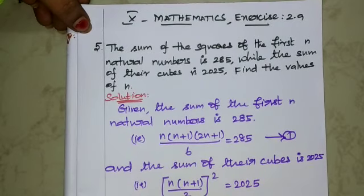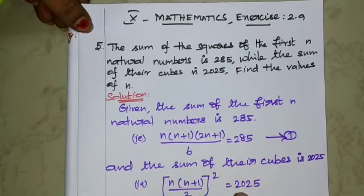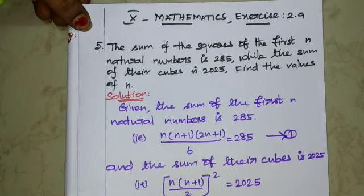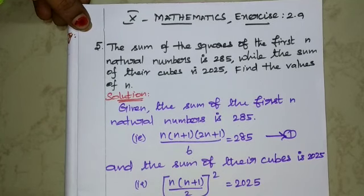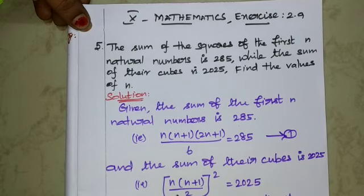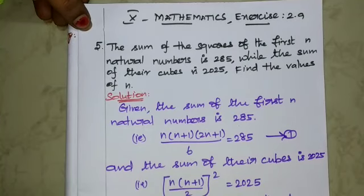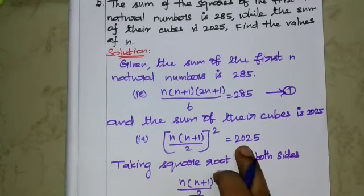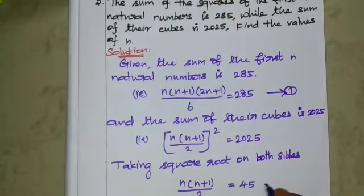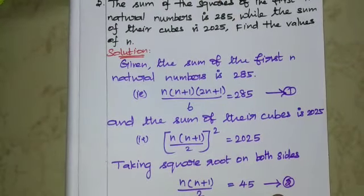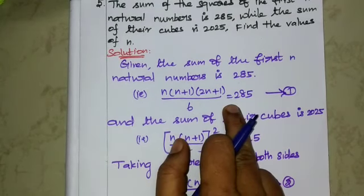Taking square root on both sides: n(n+1)/2 = 45. This is equation 2. Now substitute the value from equation 2 into equation 1.